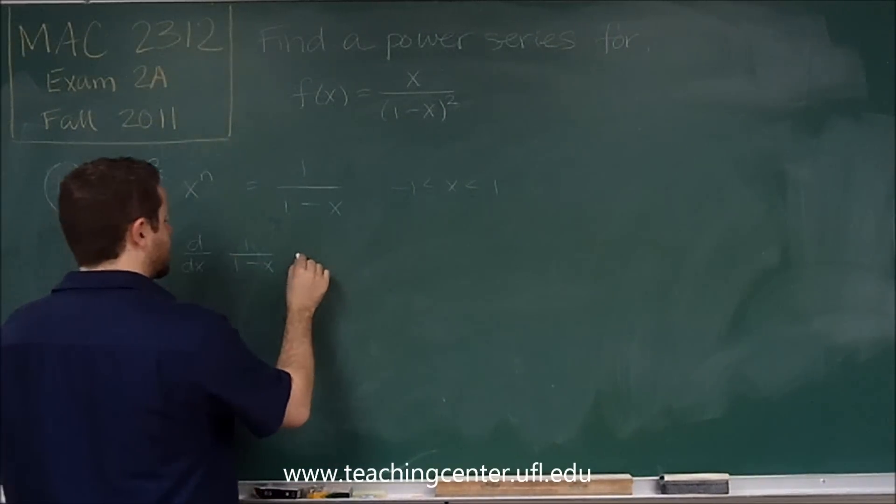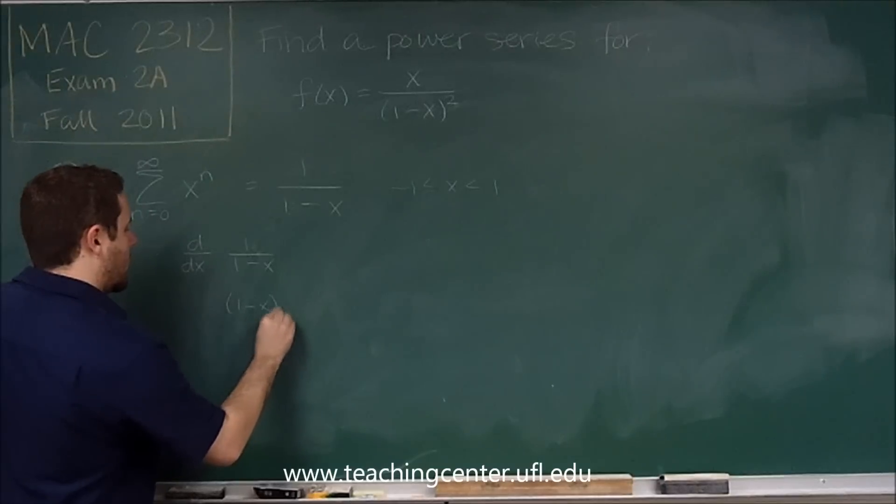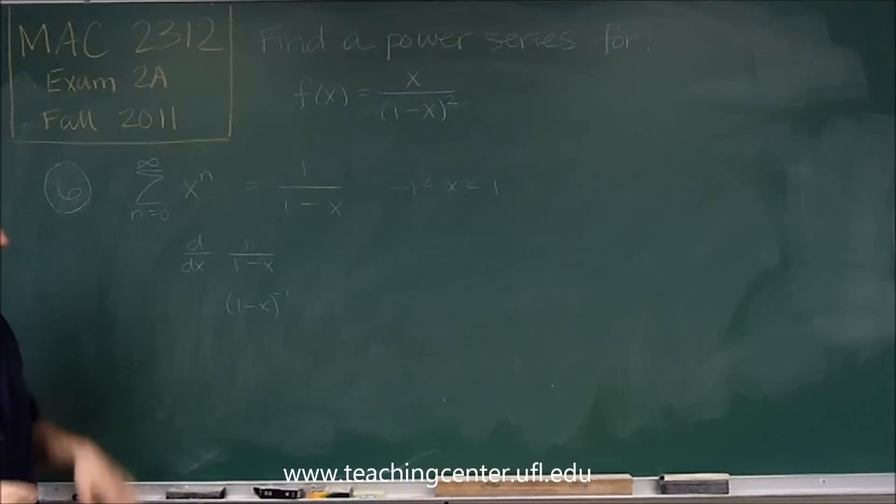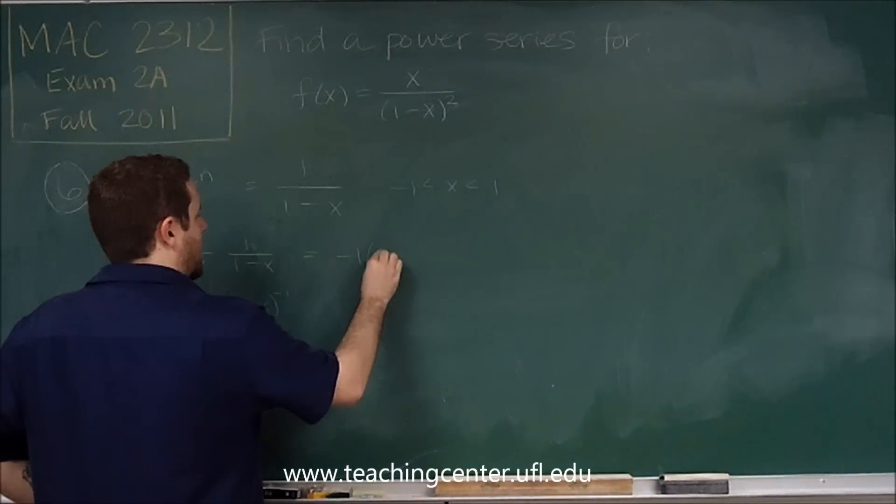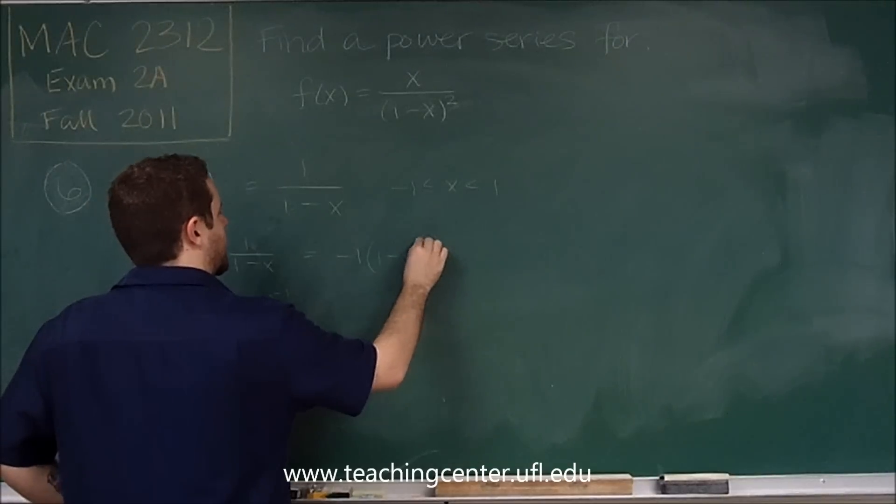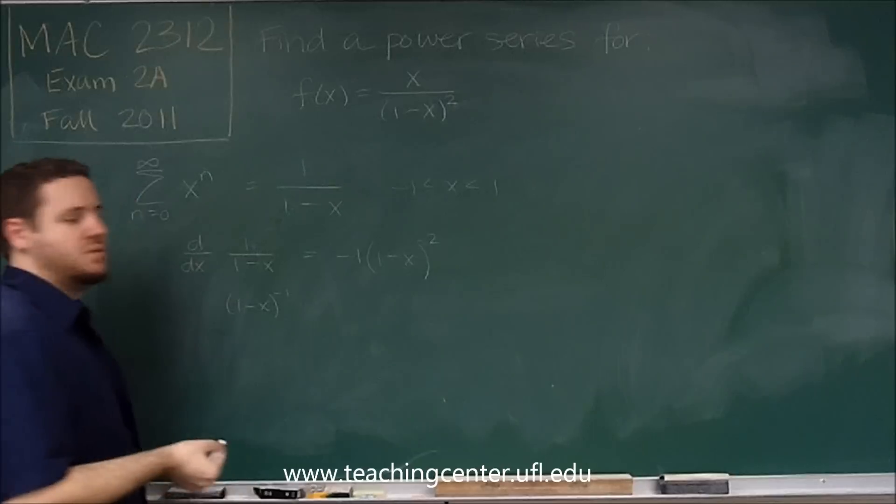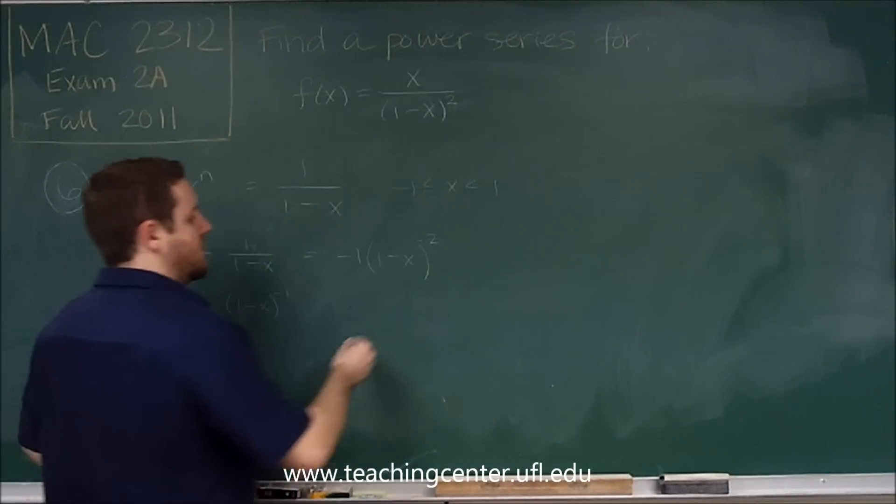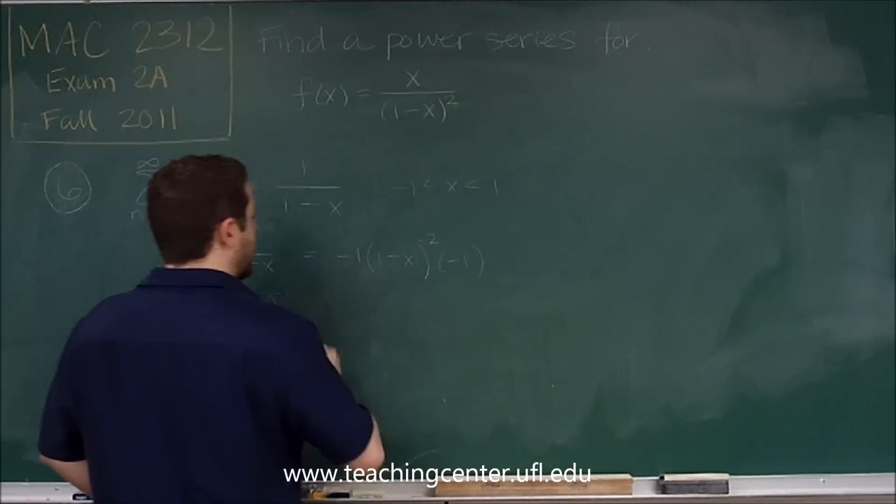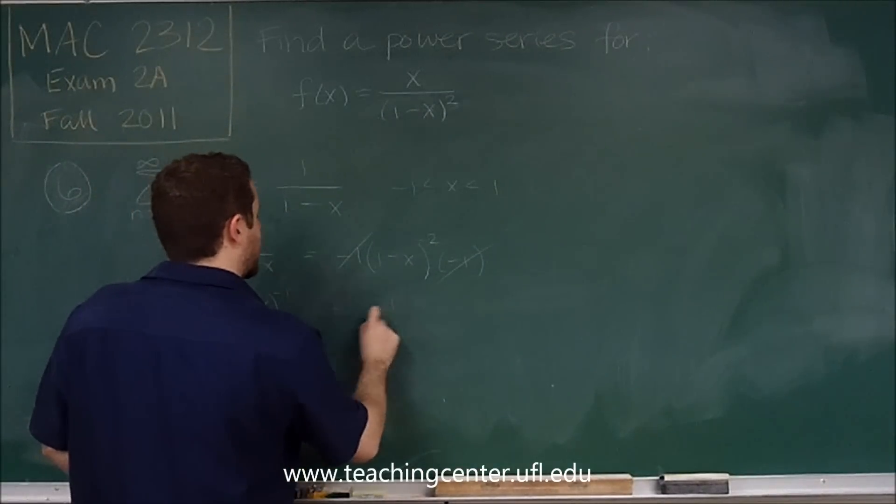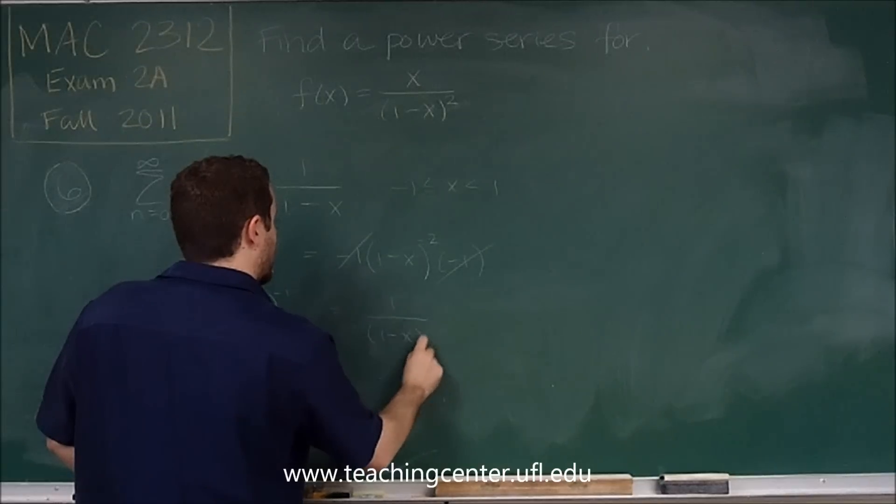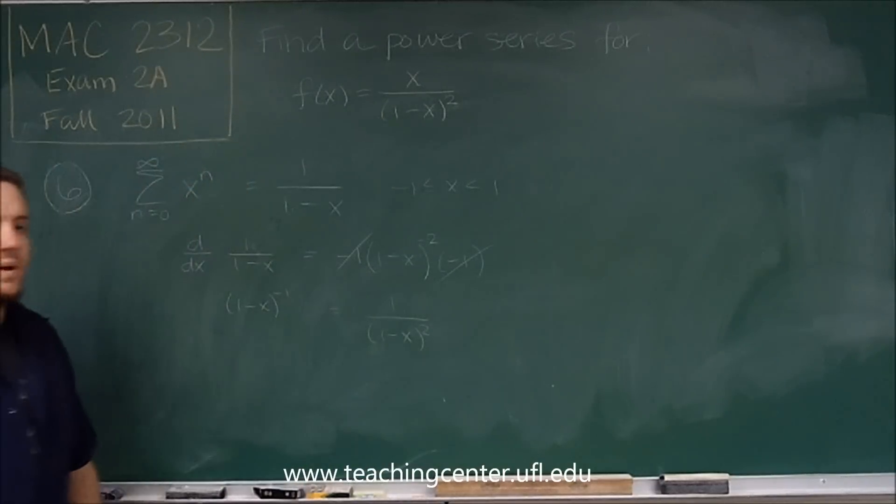In other words, 1 minus x to the negative 1. So you'd bring the negative in front, you would keep the inside the same, you would lower the power by 1. I'm just using chain rule here, and then you would multiply by the derivative of the inside which is negative 1 again. Negative 1 times negative 1 is 1. So what we get is 1 over 1 minus x quantity squared.